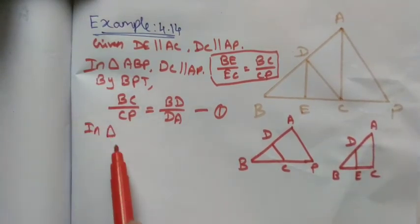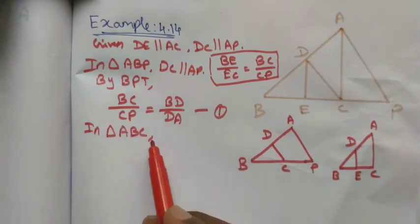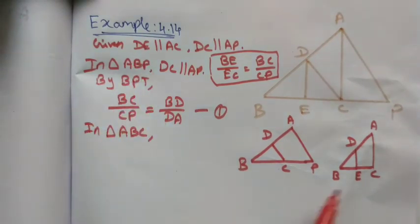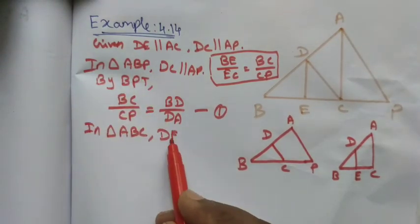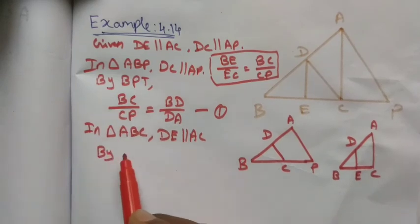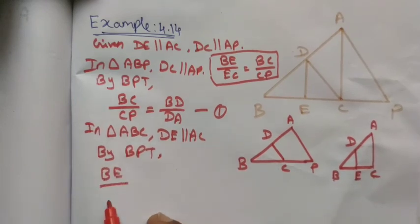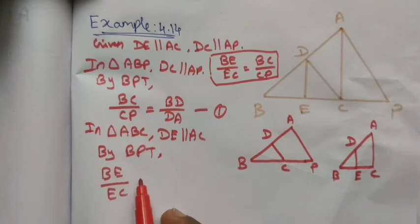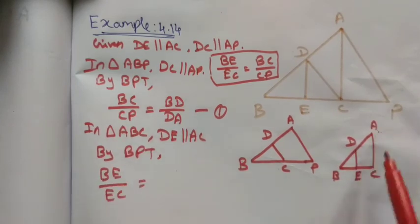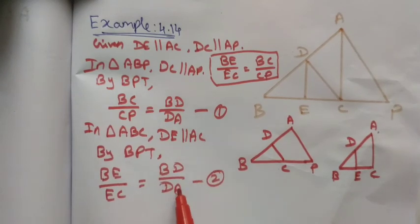Next, in triangle ABC, the condition given is DE is parallel to AC. Again, by the Basic Proportionality Theorem, BE divided by EC is equal to BD divided by DA. Let me take this as equation number 2.